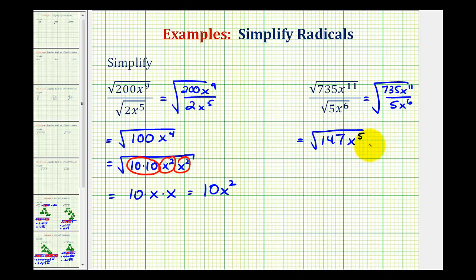And now 147x to the fifth is not a perfect square. So now we'll break this down into its prime factors. So 147 is equal to 3 times 49. And of course 49 is equal to 7 times 7. So we can rewrite this as the square root of 3 times 7 times 7.